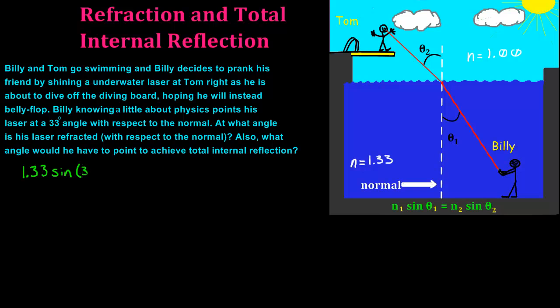So 1.33 times sin 33 is going to equal n2, and the index of refraction of air is 1.0. So we say 1.00 times sin theta2.